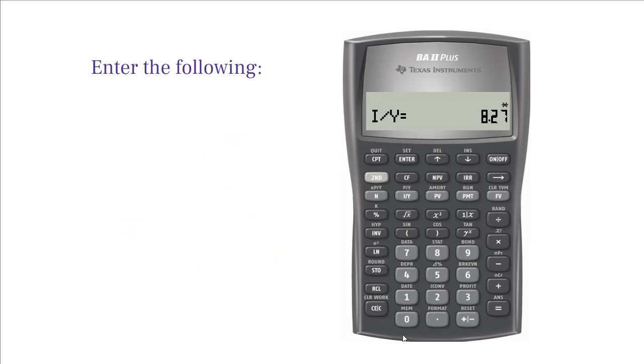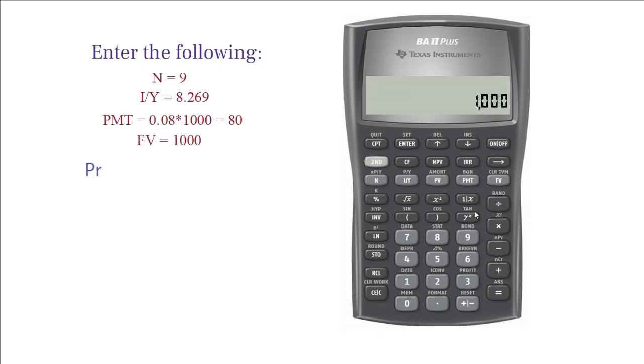N equals 9 because you are calculating price after 3 years. I over Y or YTM equals 8.269, which you calculated in the first part of the problem and did not change in 3 years. Payment equals 0.08 times 1,000 equals 80, and future value equals 1,000. Now, compute PV.